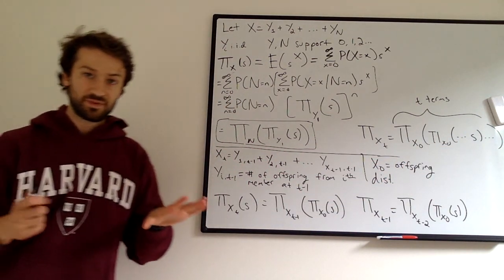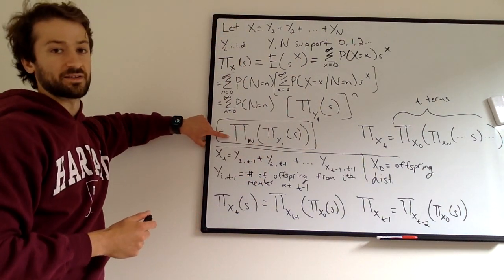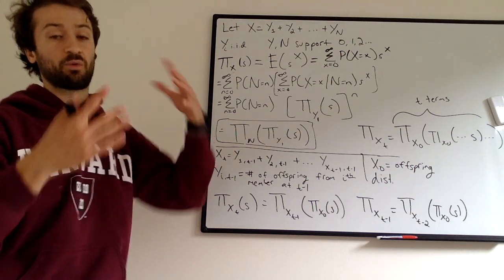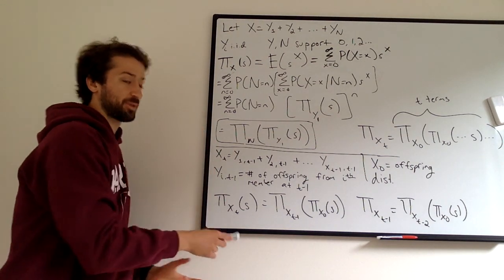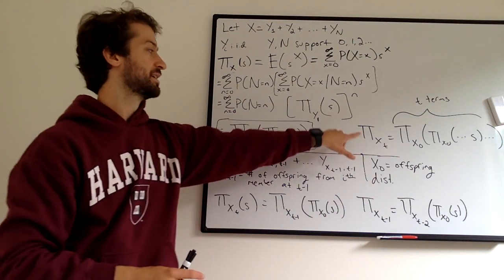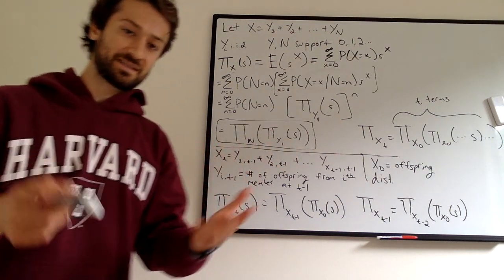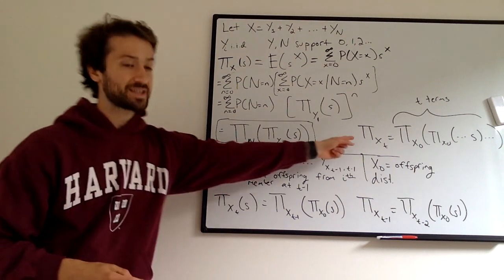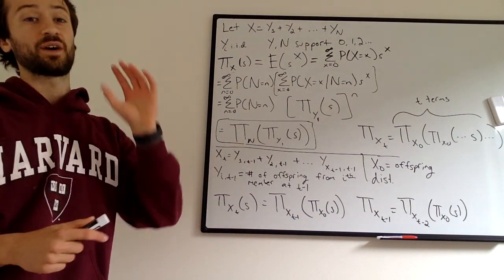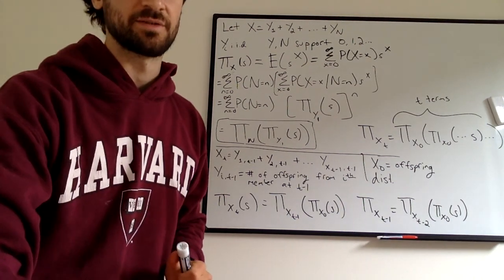So in this video we showed how to solve the PGF of a random variable that's a random sum of a random number of IID random variables. We applied that to the PGF of a branching process to show that the PGF of X_t at time t is t nested compositions of the offspring PGF. We're going to use this in the next video to find the extinction probability of a branching process, so stay tuned.